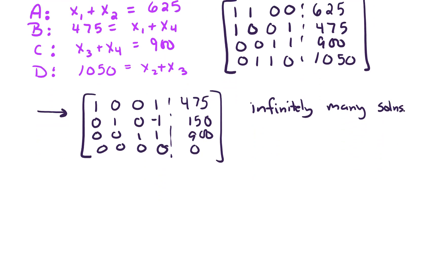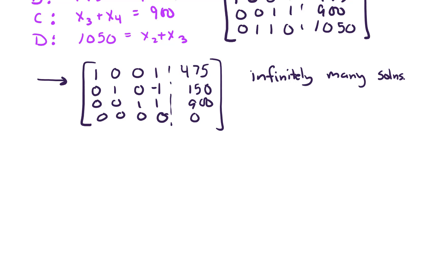But let's take a look at the types of solutions we get because we're really interested in what's the minimum flow on X3. So X1, X2, X3, and X4 is going to be a free variable. X1 is going to be negative X4 plus 475. X2 is going to be X4 plus 150. And X3 is going to be negative X4 plus 900.